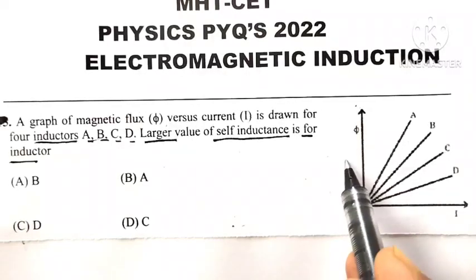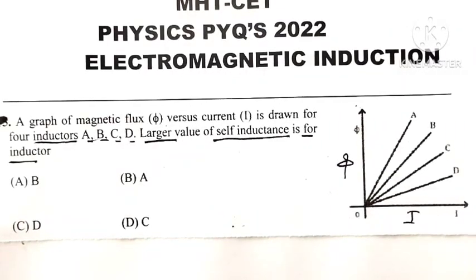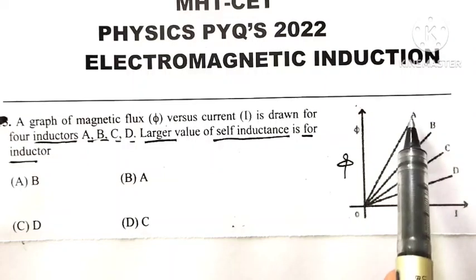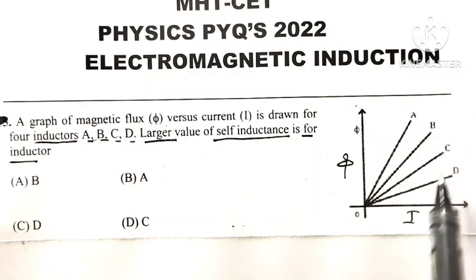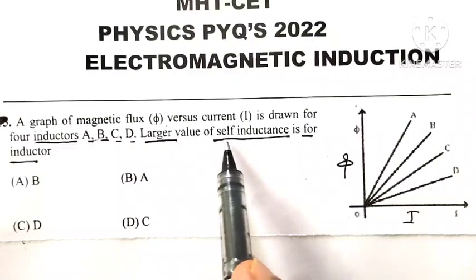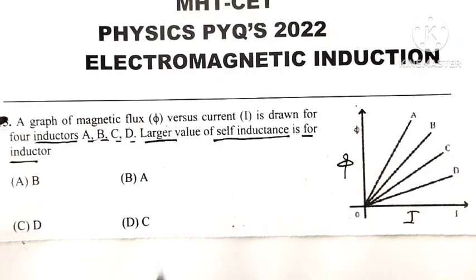Graph is plotted between flux phi against current I for four different inductors A, B, C, and D, and we have to identify which inductor has a greater value of self-inductance.